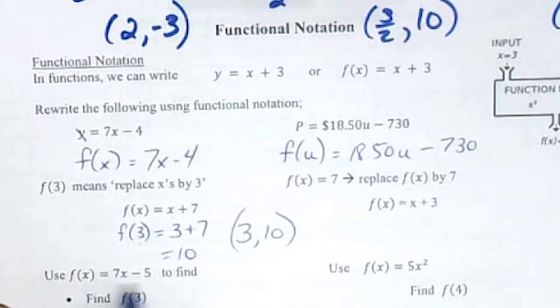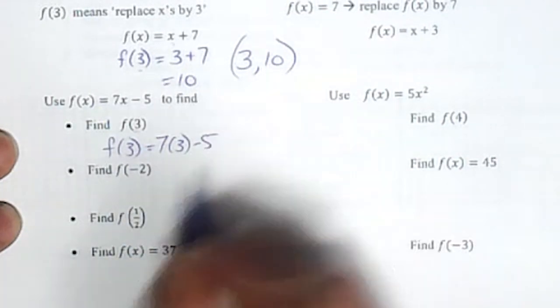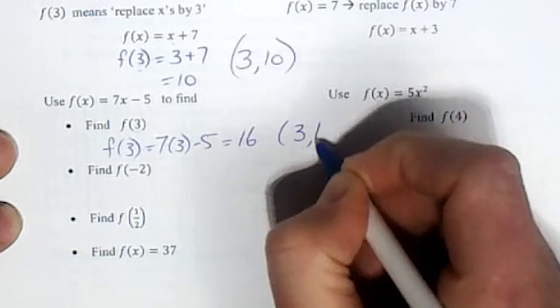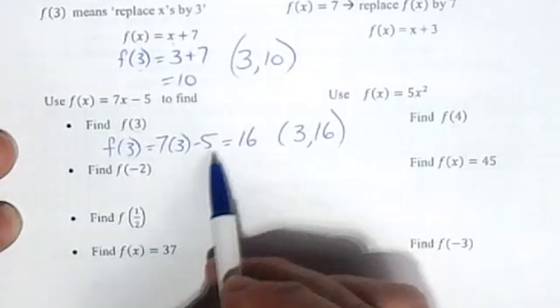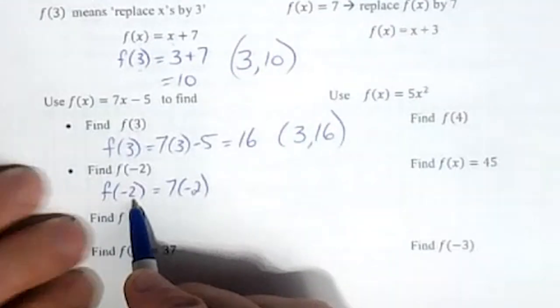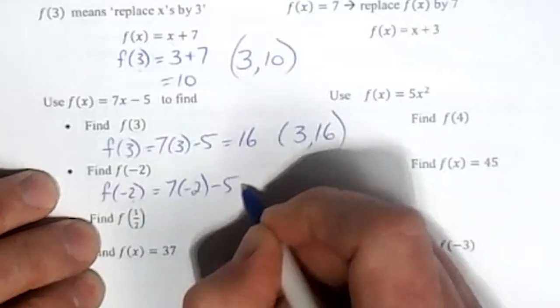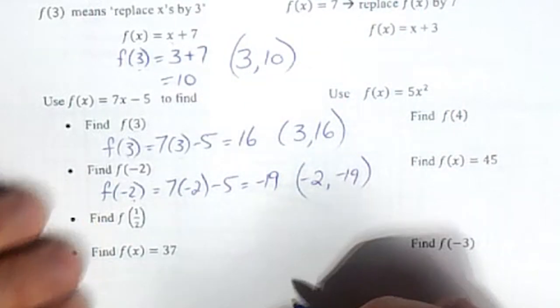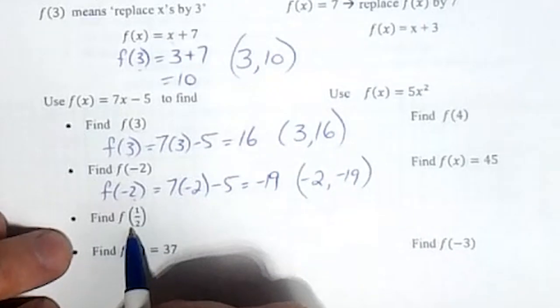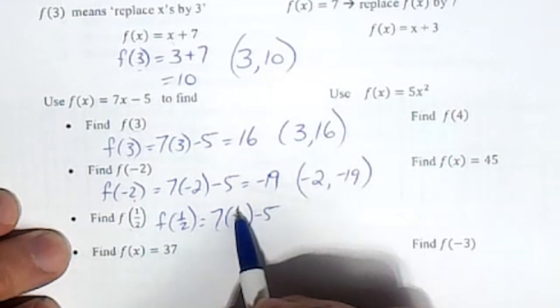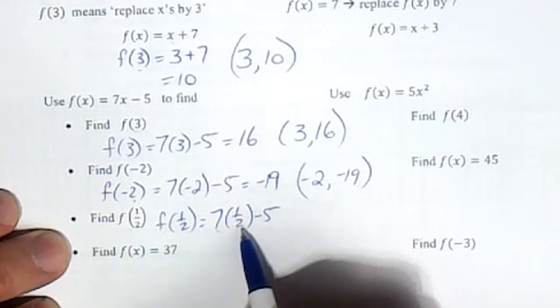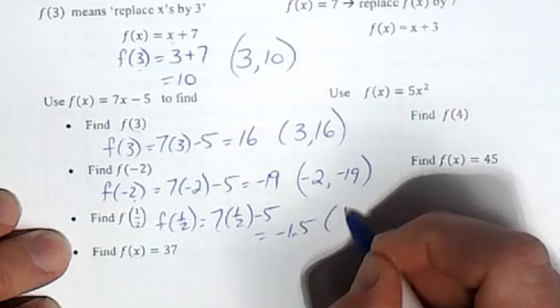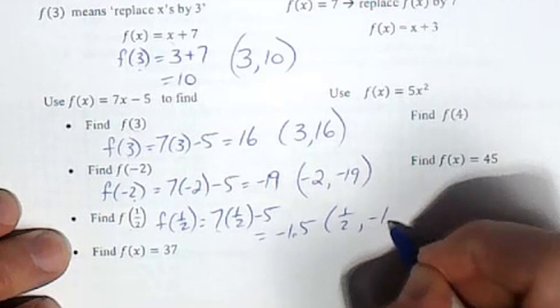This one we've got f of 3 again but we have a different function to use. So f of 3 is 7 times 3 minus 5, which equals 16. We started with 3 is the x. This one is the same equation but now we've got f of negative 2: 7 times negative 2 minus 5 equals negative 19. We get a different value, so negative 2, negative 19. The third one has a fraction so we're going to plug it in: 7 times 1 half minus 5. 7 times 1 is 7, divide by 2 is 3.5, minus 5 equals negative 1.5. So in this case, 1 half we start with or 0.5, we end with negative 1.5.